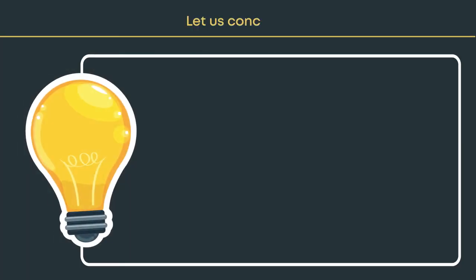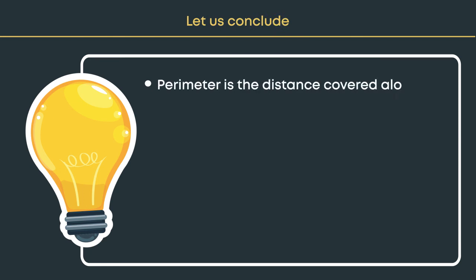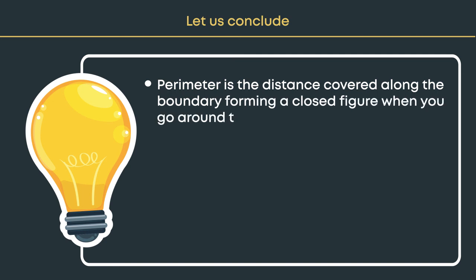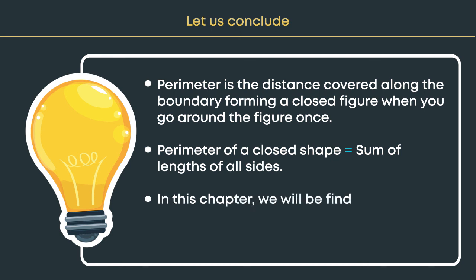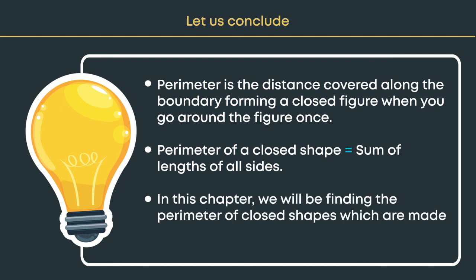Let us conclude. Perimeter is the distance covered along the boundary forming a closed figure when you go around the figure once. Perimeter of a closed shape is equal to the sum of lengths of all sides. In this chapter, we will be finding the perimeter of closed shapes which are made of straight lines.